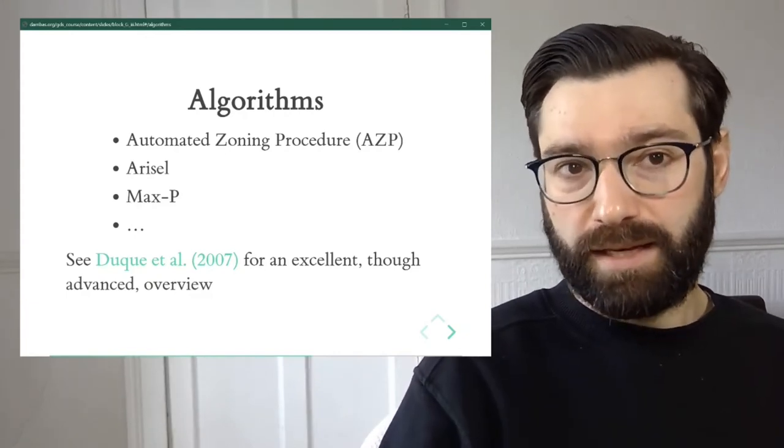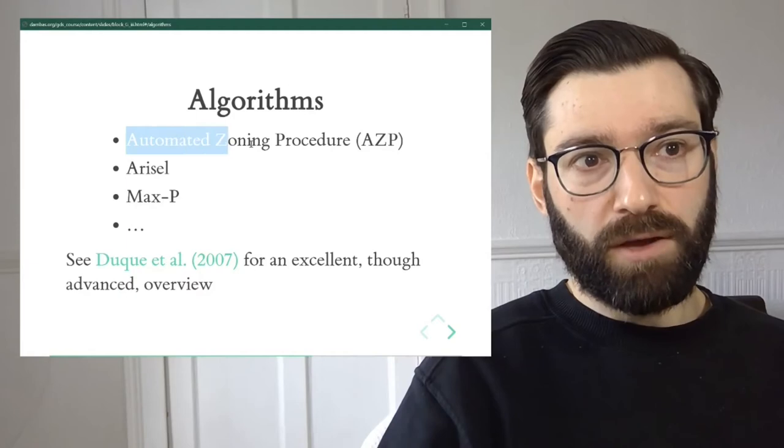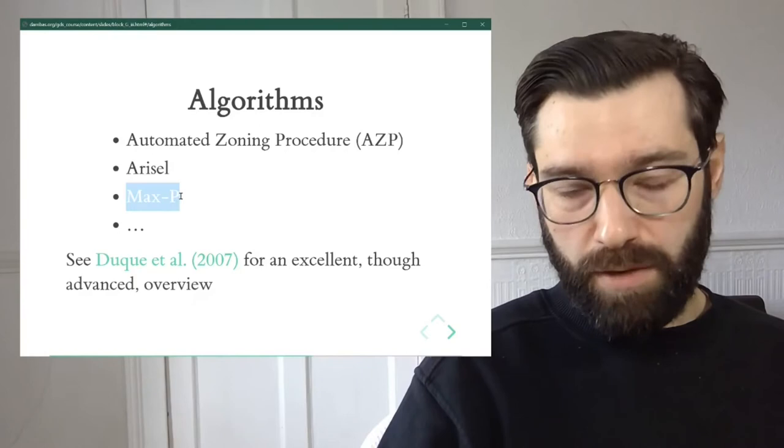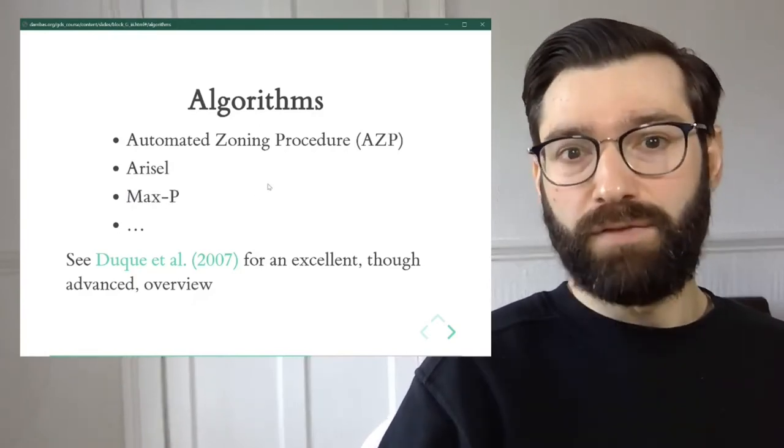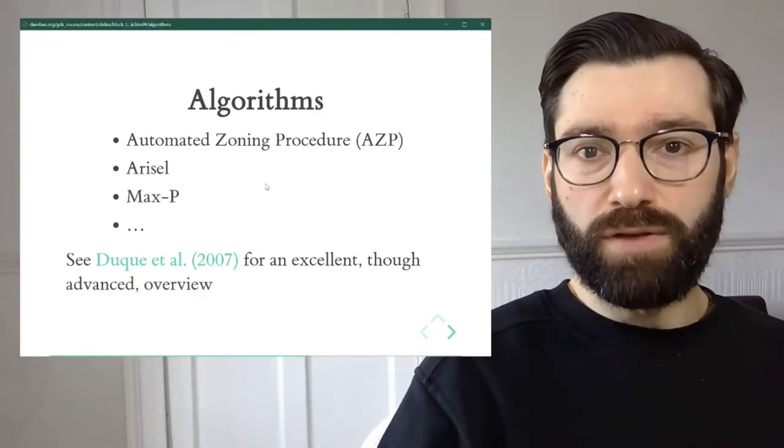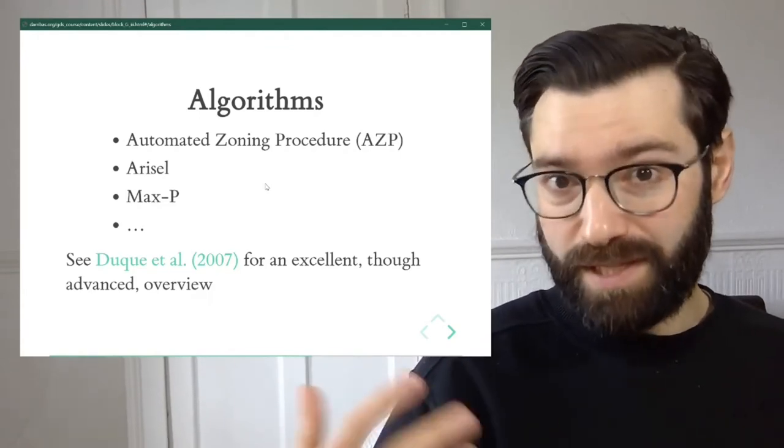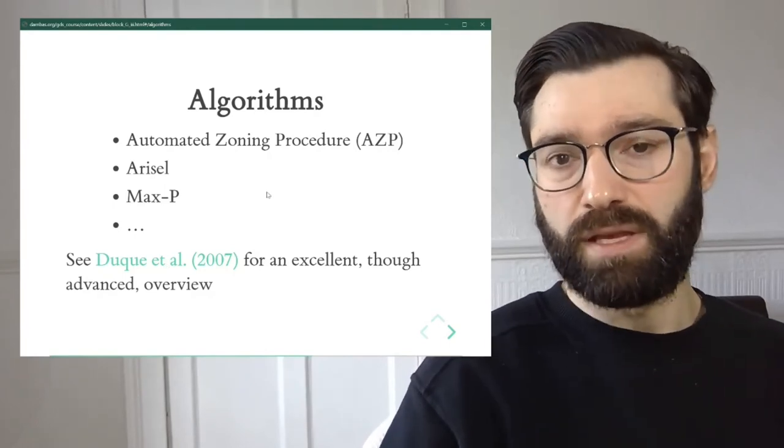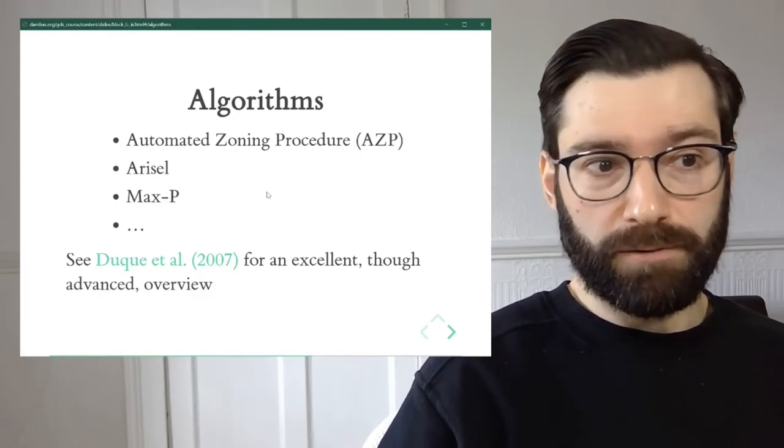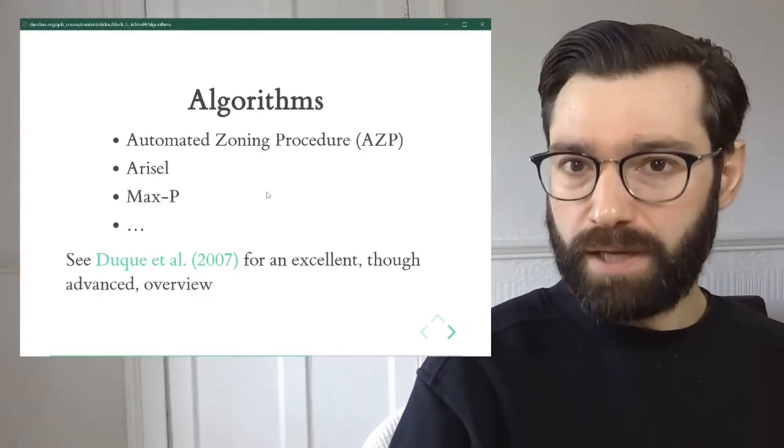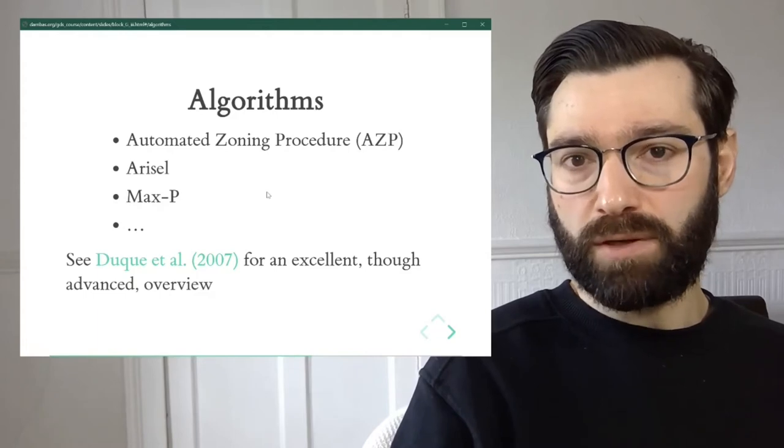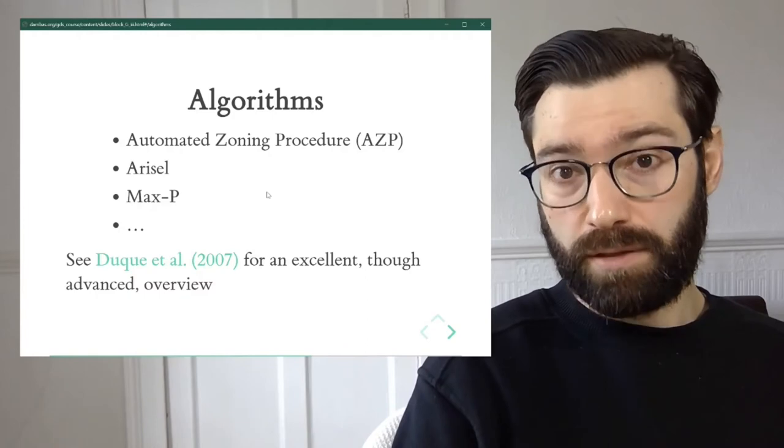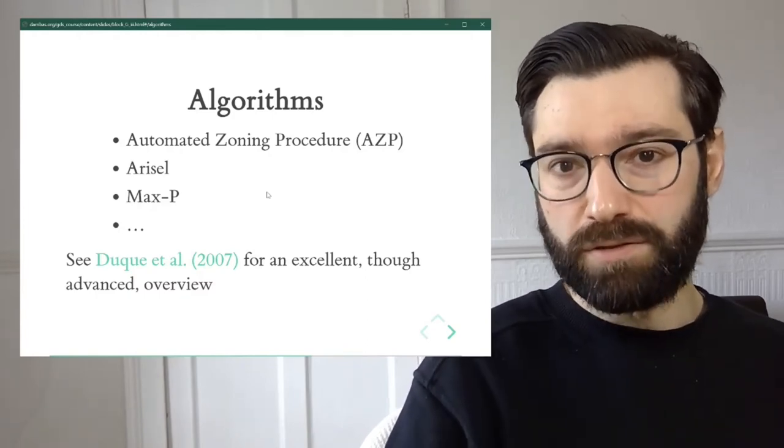Regionalization is a family of techniques that involves quite a few different algorithms. So just as an example, here is the automated zoning procedure or ACP, the RSL, the MAXP, which is a more modern take. And there's several of them. If you're interested in a categorization or typology of these algorithms, then Duque and colleagues from 2007, which is referenced also in the course website, is an excellent place to start. It's a bit more advanced probably than what we're aiming for in this course, but if you're interested, it's definitely accessible.